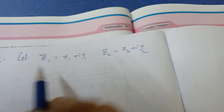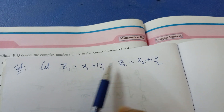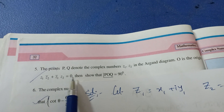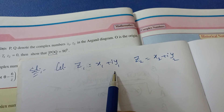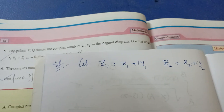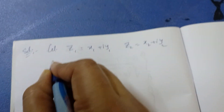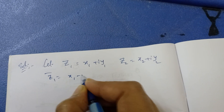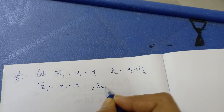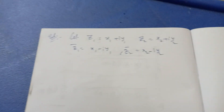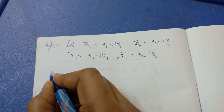I am taking z1 = x1 + iy1 and z2 = x2 + iy2. Now, z1̄ (conjugate of z1) is x1 − iy1, and z2̄ (conjugate of z2) is x2 − iy2. These are the complex numbers in a + ib form.